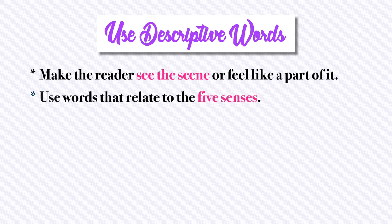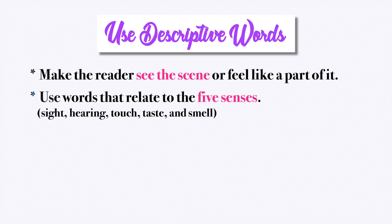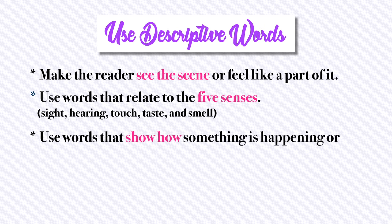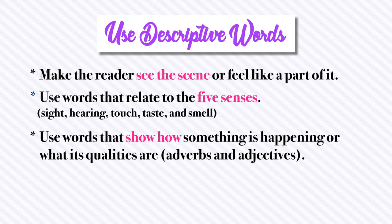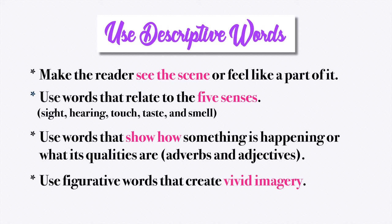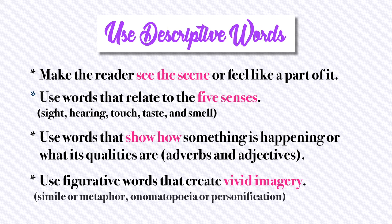And the fourth one is: use descriptive words. Make the reader see the scene or feel like a part of it. Use words that relate to the five senses: sight, hearing, touch, taste, and smell. Use words that show how something is happening or what its qualities are, using adverbs and adjectives. And finally, use figurative words that create vivid imagery — simile or metaphor, onomatopoeia or personification.